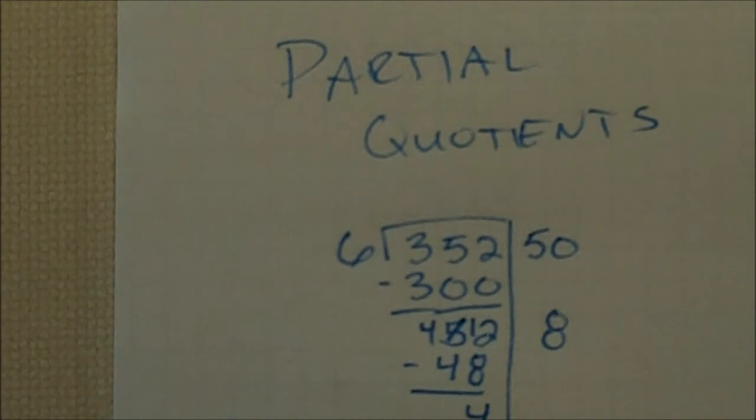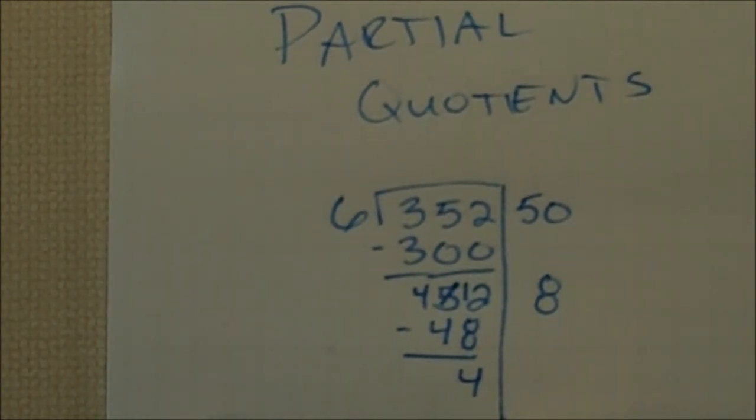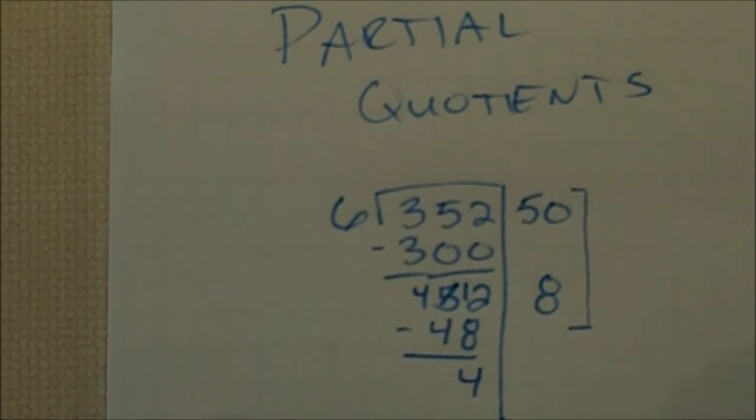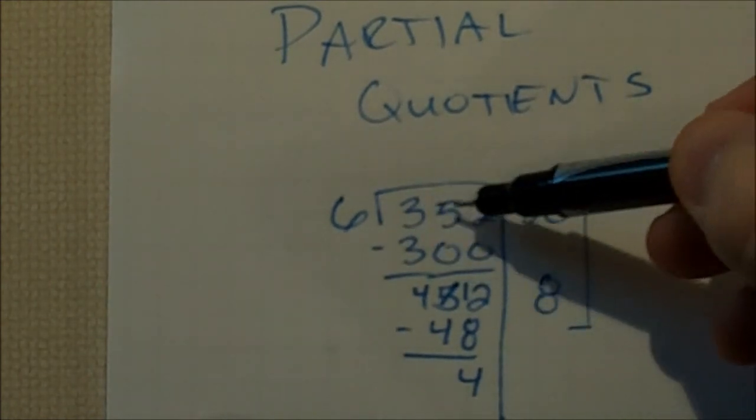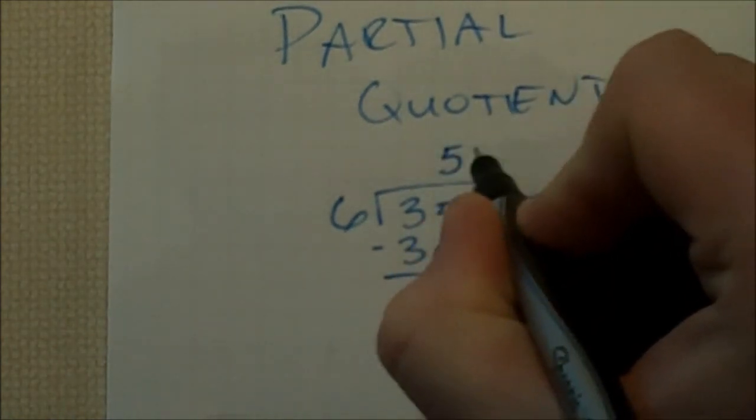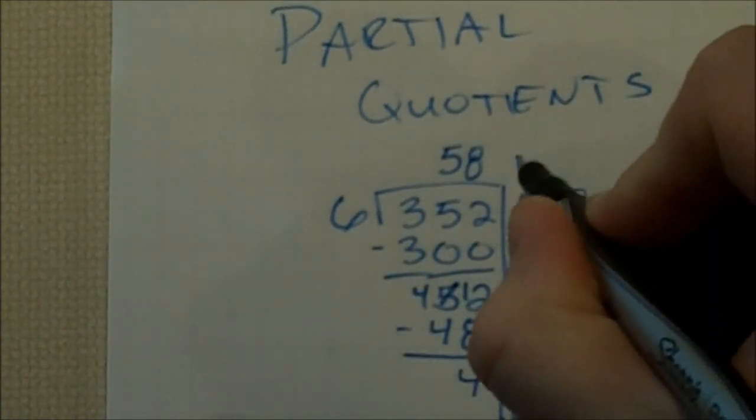6 can't go into 4. So we're left with that as a remainder. This here on the side is what we call our partial quotients. So we add them up, 352 divided by 6 gives us 58 with a remainder of 4.